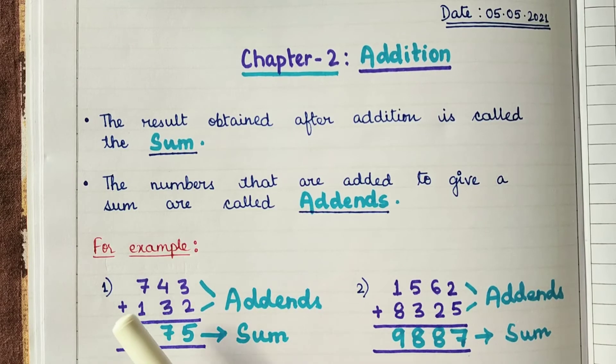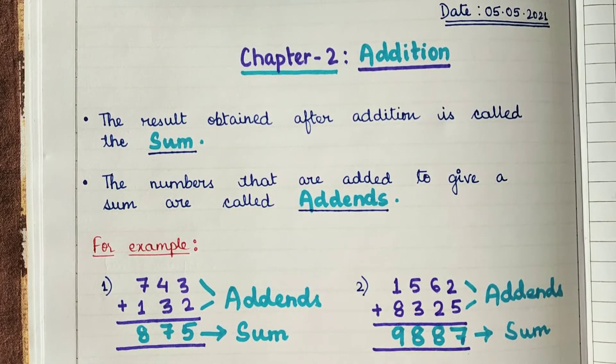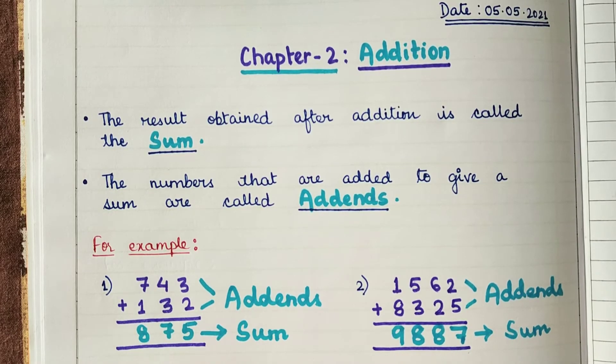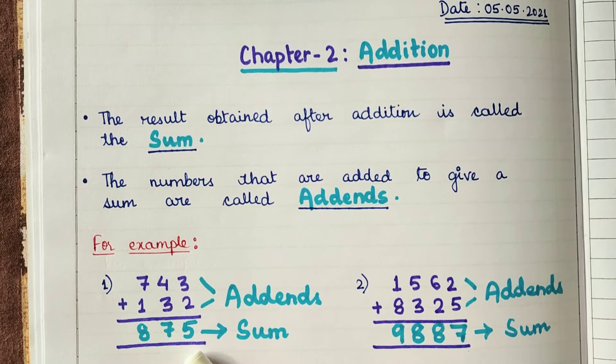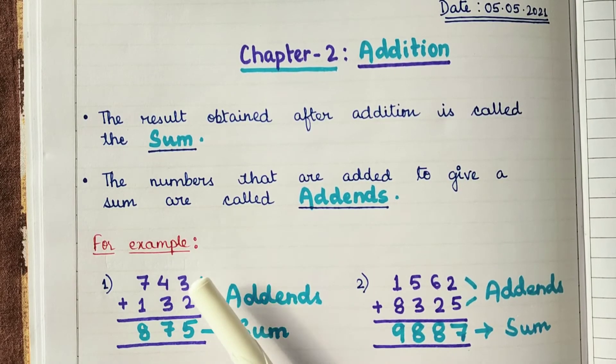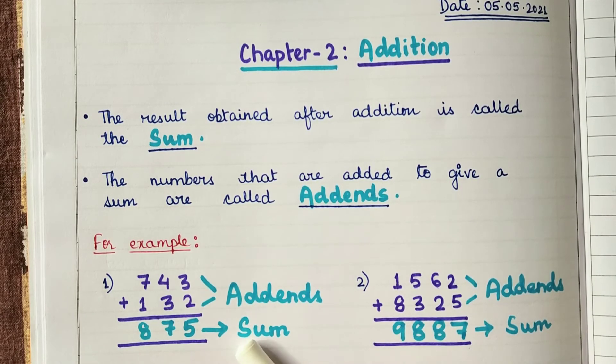Here, the number 743 is added to 132 and the result we obtained is 875. So here, these two numbers were added and the result we obtained is the sum.